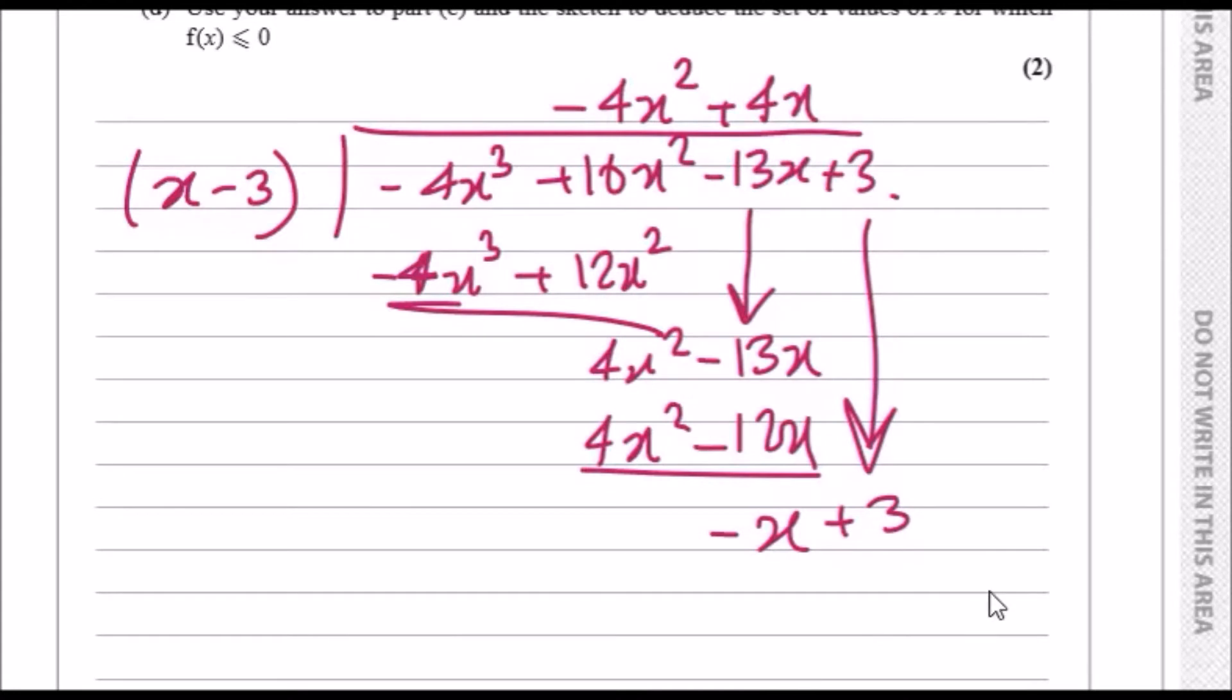Drop the three as always, and then do the same thing. How many x's fit into minus x? It will fit in negative one times. Then minus one times the linear expression should give us minus x plus 3. Subtracting this should give us a remainder of zero. So yes, we've done it correctly. To know that you've done it correctly, always ensure that you get a final remainder of zero every time.